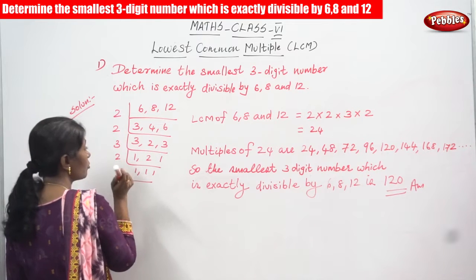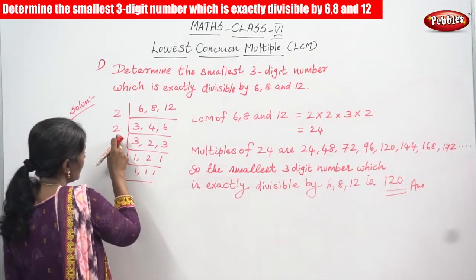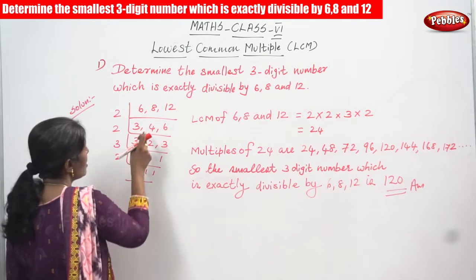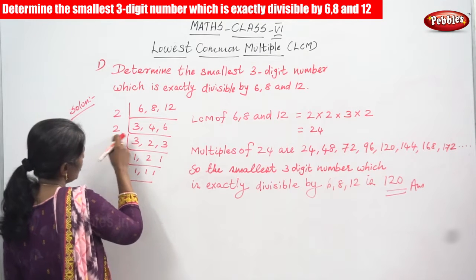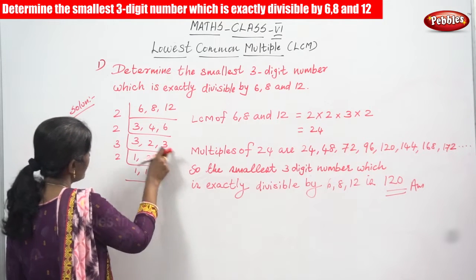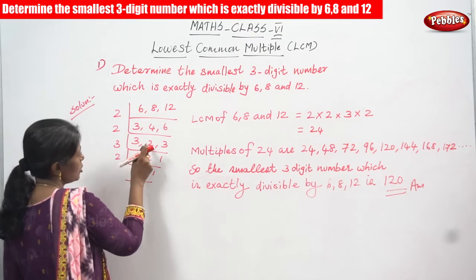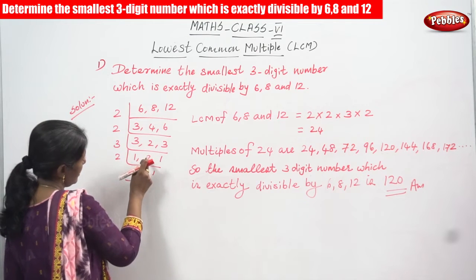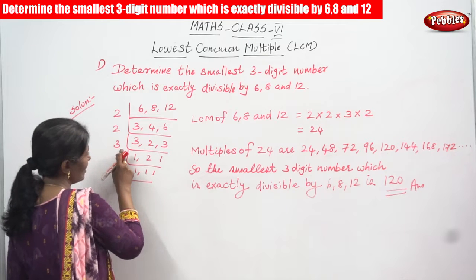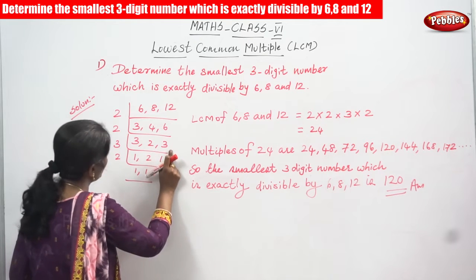Again we take 2. 3 is not divisible by 2 so we write 3 as it is. 4 divided by 2 gives 2, and 6 divided by 2 gives 3. Then we take 3 as the next divisor. 3 divided by 3 gives 1, 2 is not divisible by 3 so we write 2 as it is, and 3 divided by 3 gives 1.